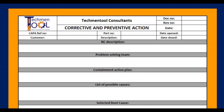This is the sample format of CAPA. It consists of information about problem description, containment action taken, root cause analysis, corrective action, preventive action, verification comments, and so on.